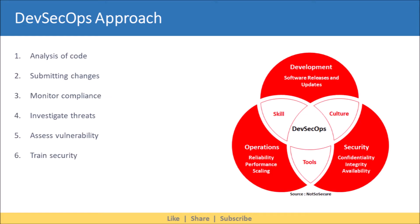Various components involved in a DevSecOps approach include: analysis of code, where we deliver code in small pieces so the team can quickly identify vulnerabilities. Next is allowing anyone to submit changes, which can increase efficiency and speed.